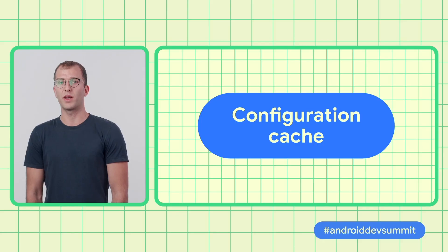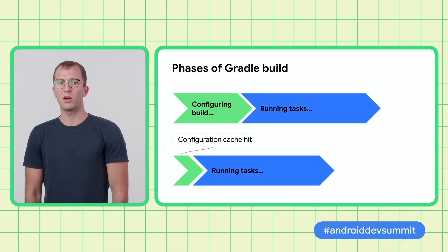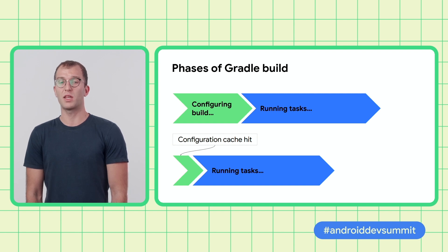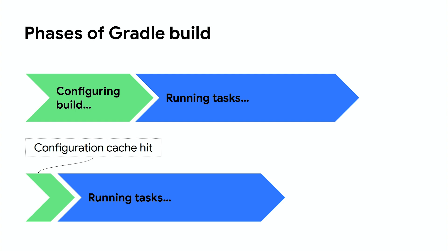Now let's talk about Gradle configuration cache. At the beginning of every build, Gradle creates a task graph which is used to execute build operations. We call this the configuration phase, and it may take from a couple of seconds to tens of seconds. Configuration cache is a Gradle feature that allows caching the output of the configuration phase of the build, and reusing that state in subsequent builds. When there is a configuration cache hit, all tasks run in parallel, and dependency resolution results are cached, resulting in further improvements. Note that this is different from the Gradle build cache, which is used to cache task output.